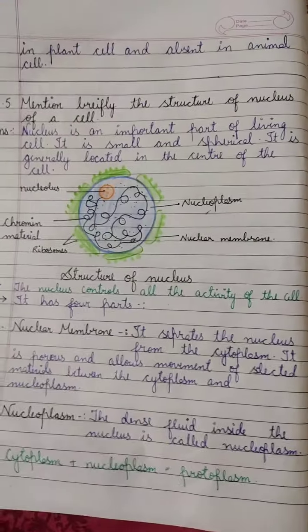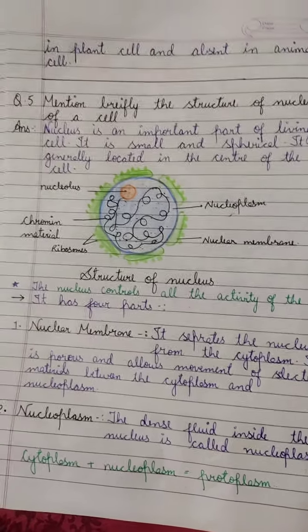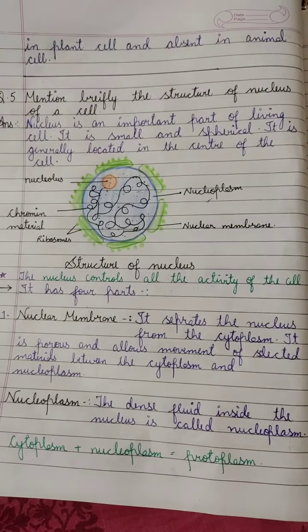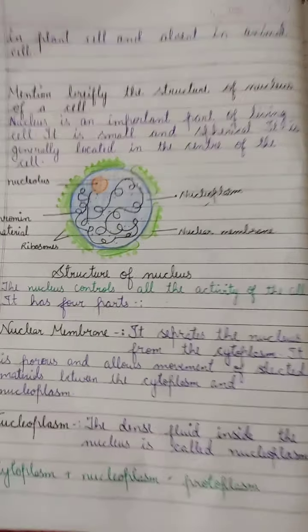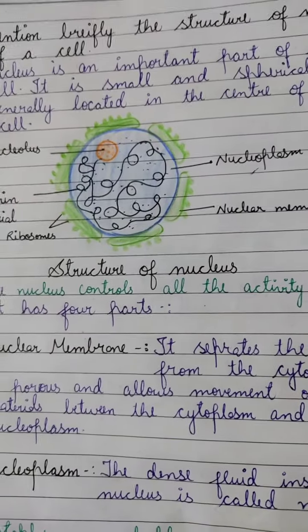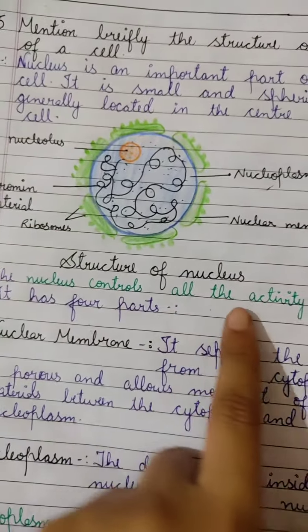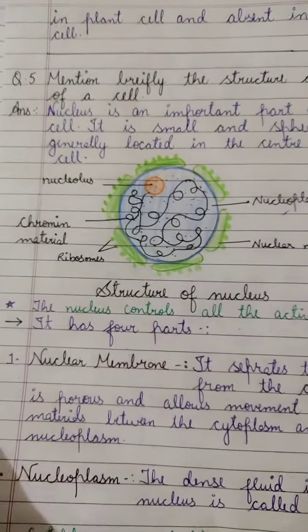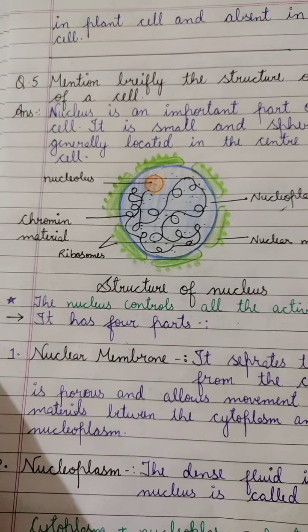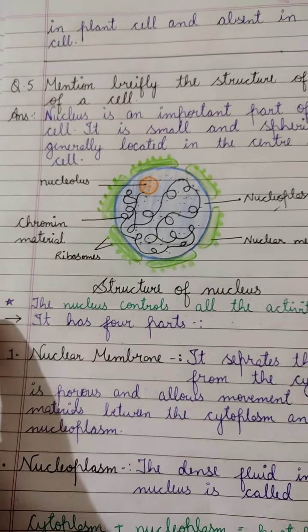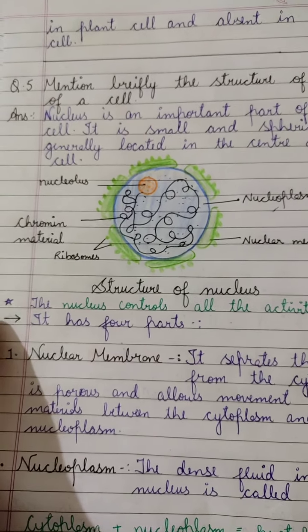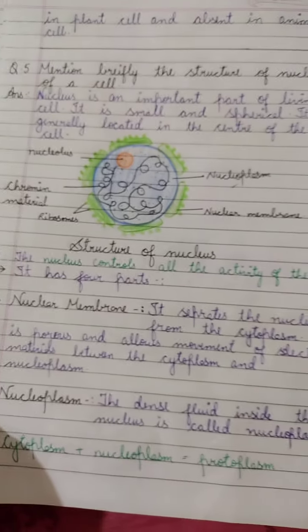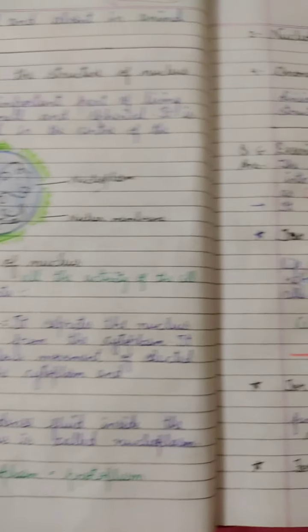Then see answer number 5: mention briefly the structure of the nucleus of the cell. This is the structure of the cell and this is the labeled diagram, so you will also draw the same diagram on your blank sheet. All topics you have to write like this.